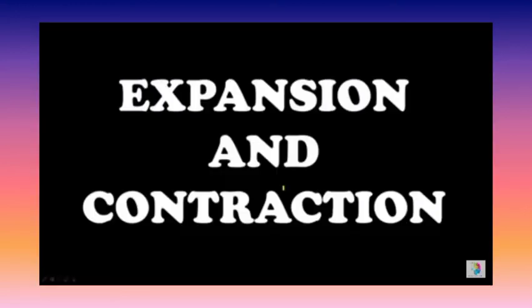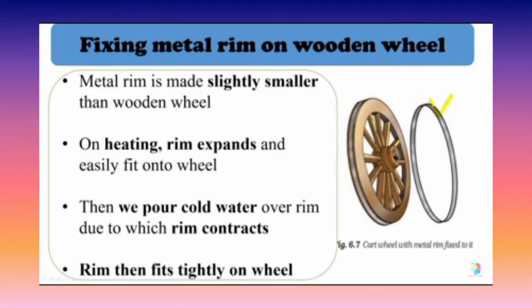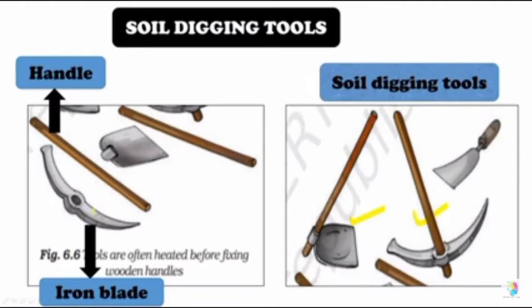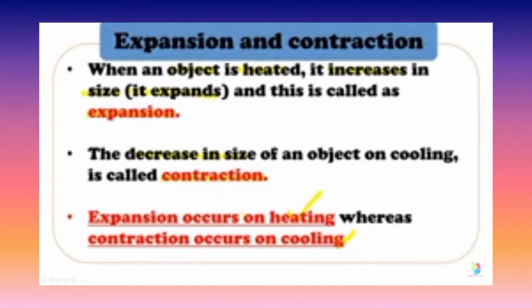Another type of change is expansion and contraction. Metals expand while heating. When it's cold, they will contract. That means when an object is heated, it increases in size, and this is called expansion. The decrease in size of an object on cooling is called contraction.